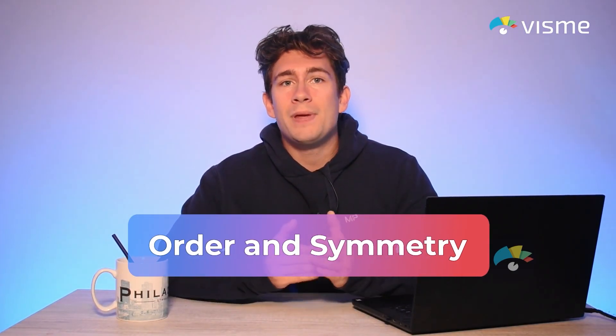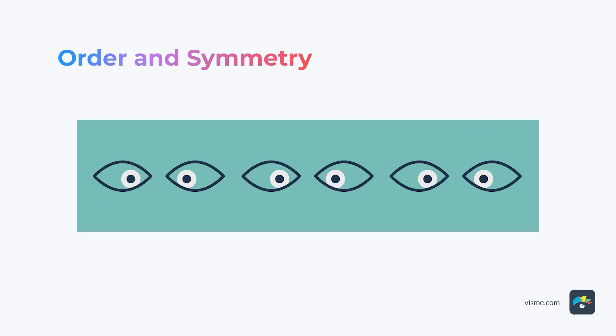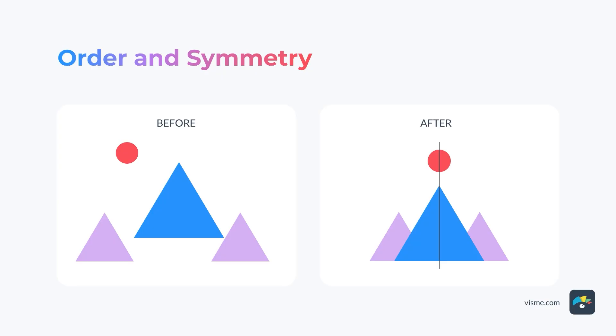The order and symmetry principle states that people tend to perceive objects as symmetrical shapes whenever possible. It's human nature to look for order among chaos. For example, in this graphic with six oval eye shapes, we don't see six shapes — we see three pairs of eyes due to how the interior circles resemble pupils looking towards the center. In a previous lesson, we talked about symmetrical and asymmetrical balance. This principle is the foundation of that design technique. Order and balance are directly related to each other. Look at the example of these symmetrical and non-symmetrical mountain icons — the one on the right is more orderly and complete, while the one on the left has a good asymmetrical balance.